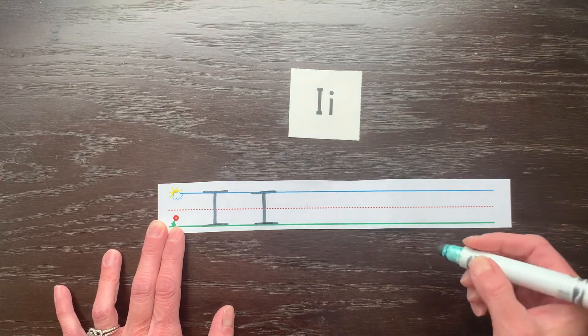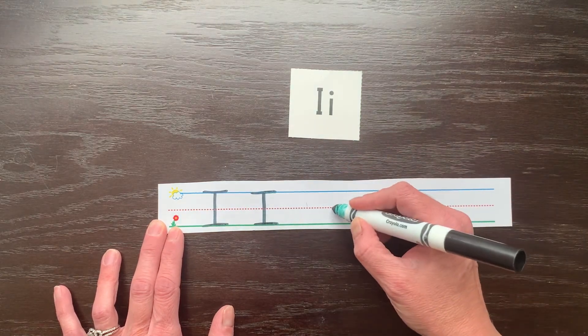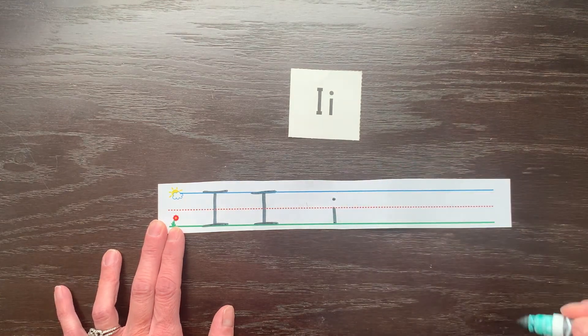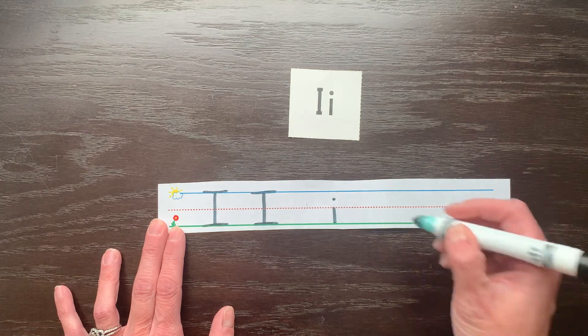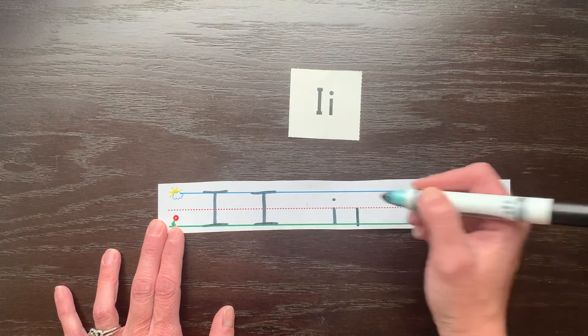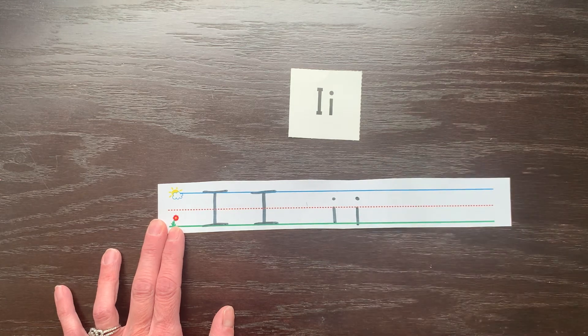Lowercase i starts in the middle and it is just a straight line down. Then you pick your pencil up and you put a small dot above it. Let's try that one more time. Start in the middle. Little line down. Pick your pencil up. Add a dot. Letter I.